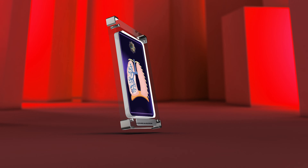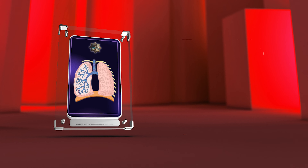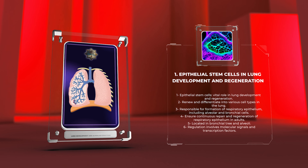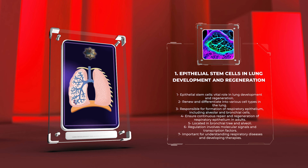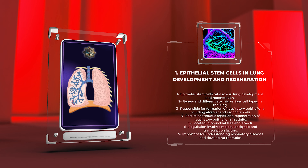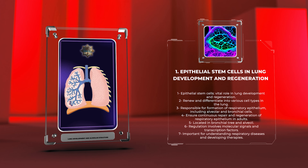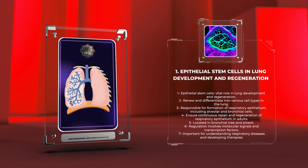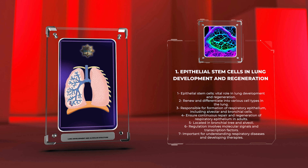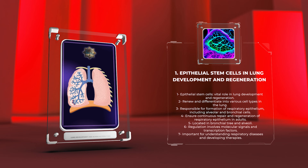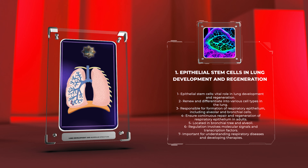Epithelial stem cells play a vital role in lung development and regeneration. They can renew themselves and differentiate into various cell types in the lung. These stem cells are responsible for the formation of respiratory epithelium, including alveolar and bronchial cells. In adults, they ensure continuous repair and regeneration of the respiratory epithelium.